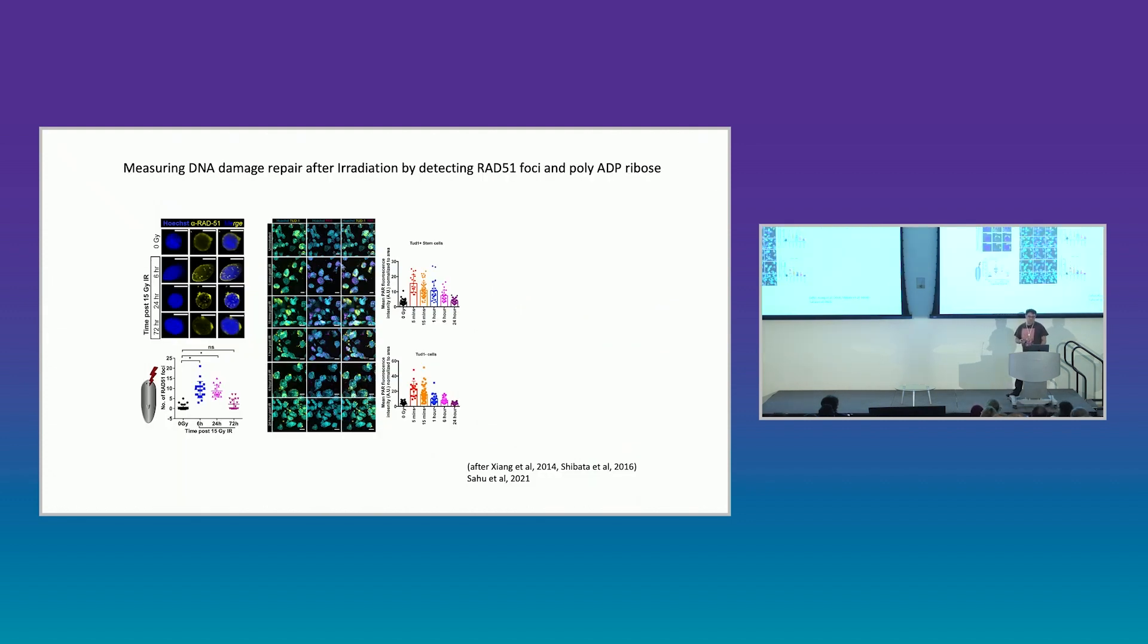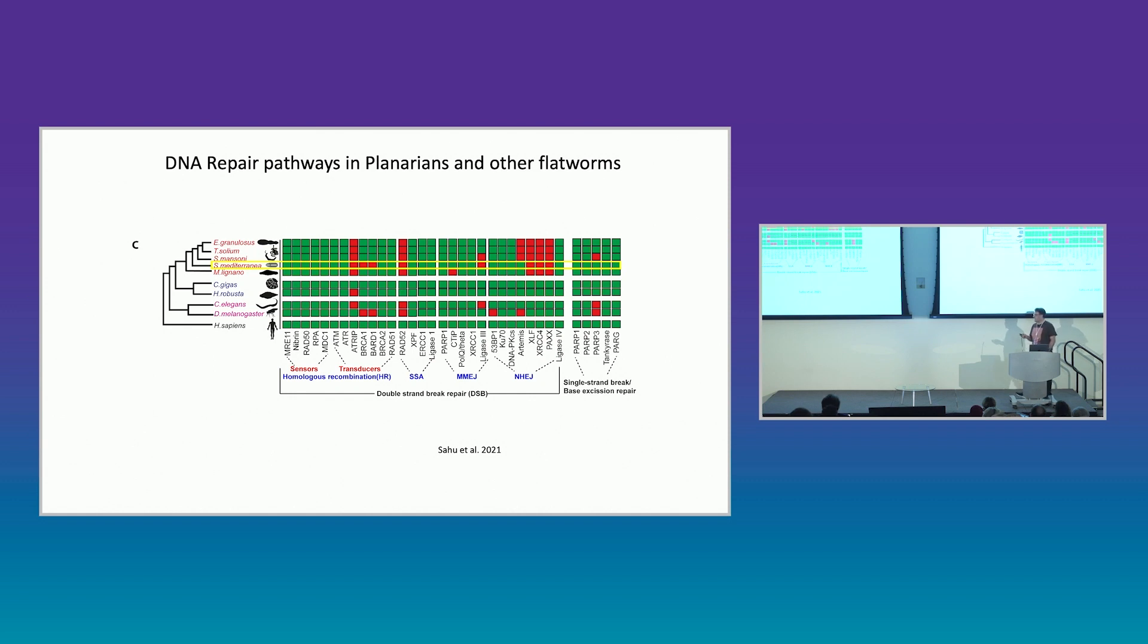So we developed some tools to look at the DNA damage after ionizing radiation. An antibody, a RAD51 antibody, that measures damage in cells over the first day or so. And then an antibody for poly ADP ribose that measures very acute damage. And so here you have damage in stem cells measured by poly ADP ribose staining, and damage in non-stem cells. And you can see that this level of poly ADP ribose is very high immediately after exposure to ionizing radiation, and then it decreases over the first day. Looking in the genome of planarians, you can see that the DNA damage repair pathways are, for all intents and purposes, conserved. There's a few losses here, which are interesting.